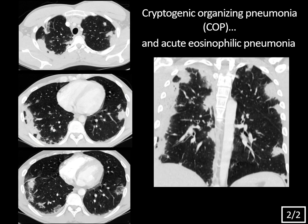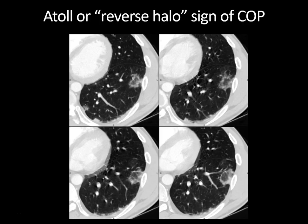Looking further at the reverse halo sign — central ground glass opacity surrounded by a rind of increased airspace density — this is actually fairly specific for COP, though only seen in about 20% of cases. It's also been described in opportunistic infections and sarcoidosis. Don't confuse it with the halo sign, which is the opposite: a central solid nodule surrounded by ground glass opacity, seen in angioinvasive fungal infection and other diseases. The other name for the reverse halo is the atoll sign — an atoll being a ring-shaped reef or island formed of coral. One wonders if the radiologist who coined that term was thinking of a more tropical environment than the dark reading room they were trapped in.